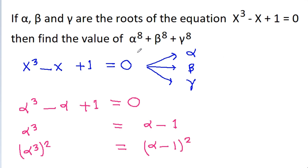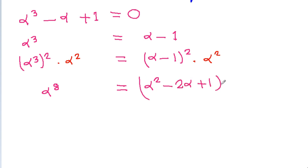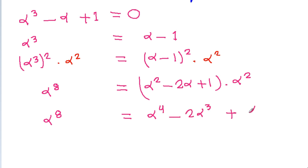For alpha⁸, if we multiply both sides by alpha², then alpha⁶ times alpha² gives alpha⁸. That is alpha⁸ = (alpha - 1)² times alpha² = (alpha² - 2alpha + 1) times alpha². Expanding, alpha⁸ = alpha⁴ - 2alpha³ + alpha².